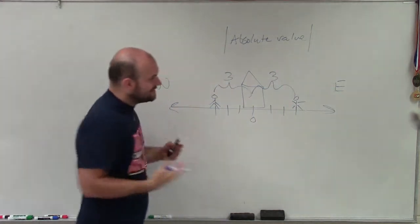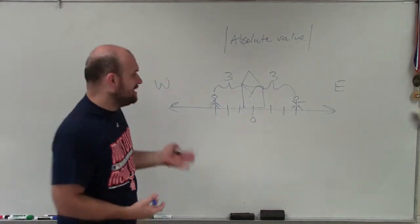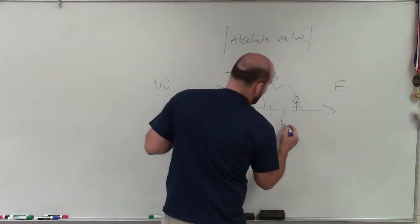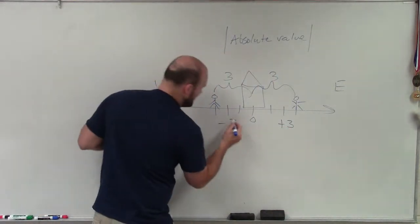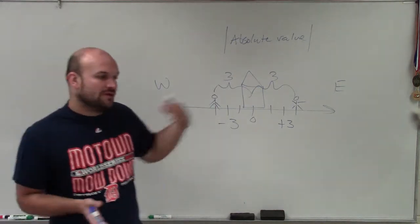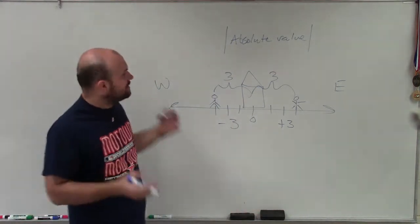Now, when we look at a line or even on a graph, a lot of times you see to the right, well, that's positive three miles, and that's negative three miles. Well, yes, when we're looking at direction, that's a great example.